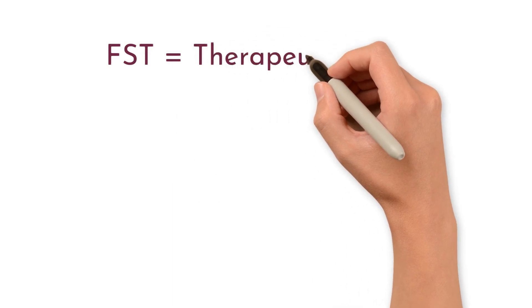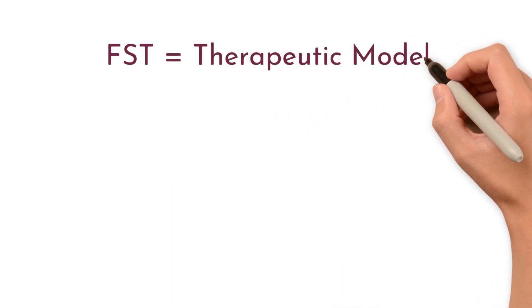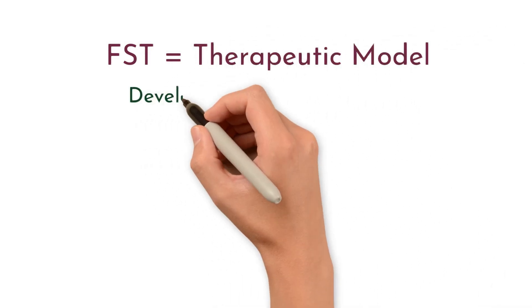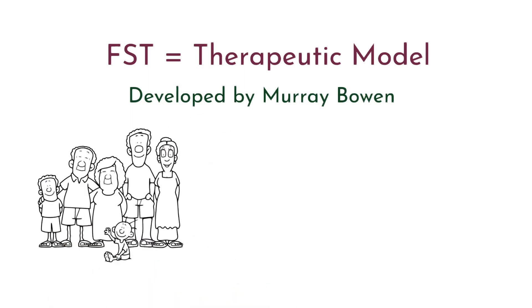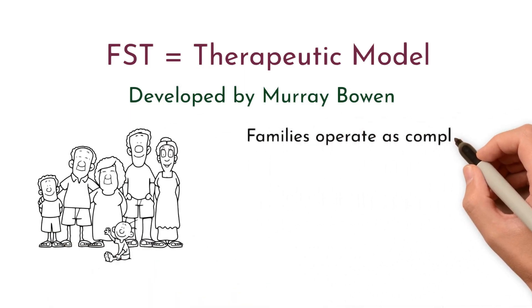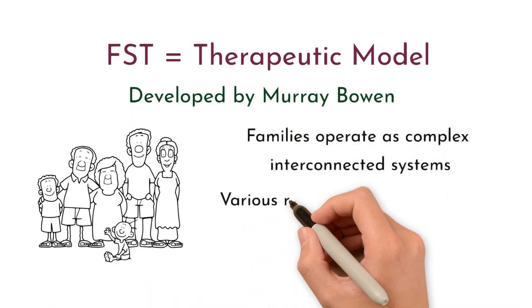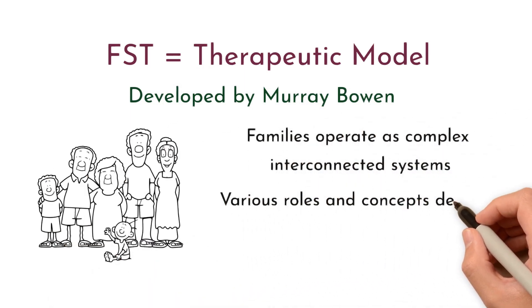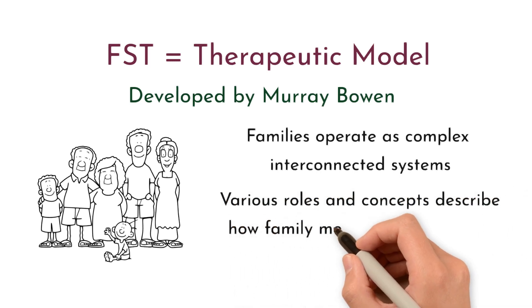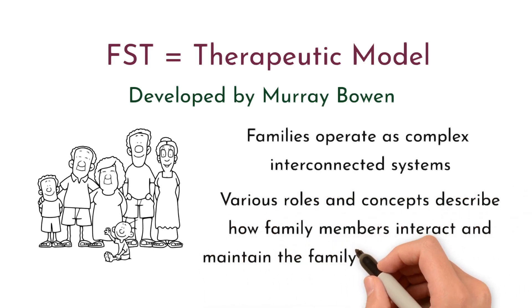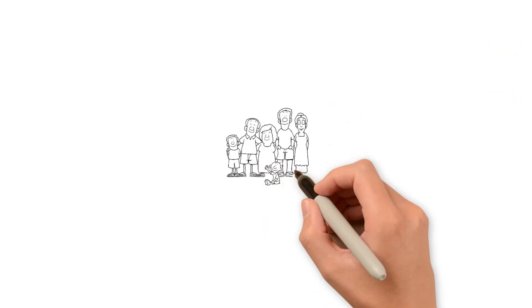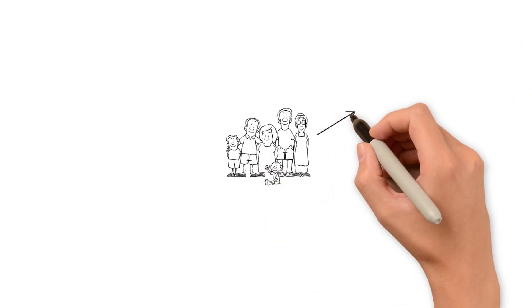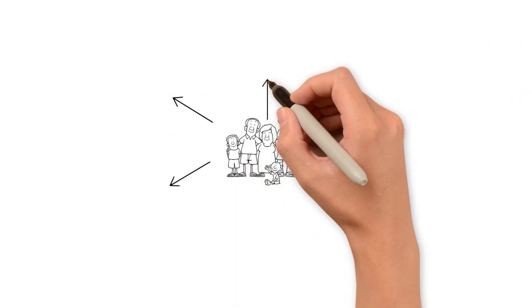Family Systems Theory, developed by Murray Bowen, suggests that families operate as complex, interconnected systems. Within this framework, various roles and concepts describe how family members interact and maintain the family's emotional balance. Here are some of the key roles from Family Systems Theory.